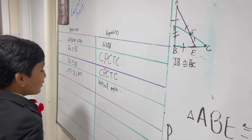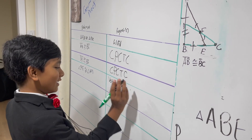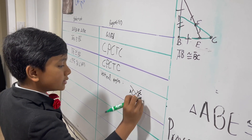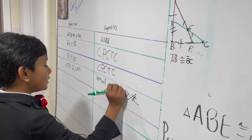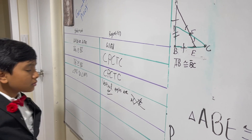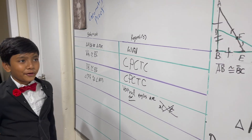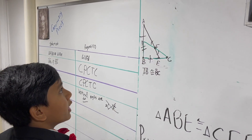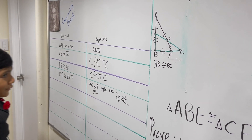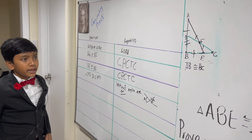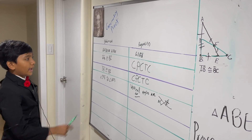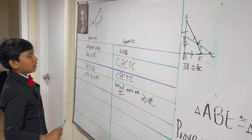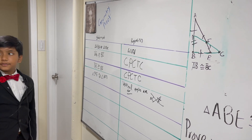So we have vertical angles, which are angles formed by the intersection of two lines that are opposite and always congruent. So we know these two angles are congruent. Therefore, AB corresponds to BC and they are congruent, and DB corresponds to BE and they are also congruent.